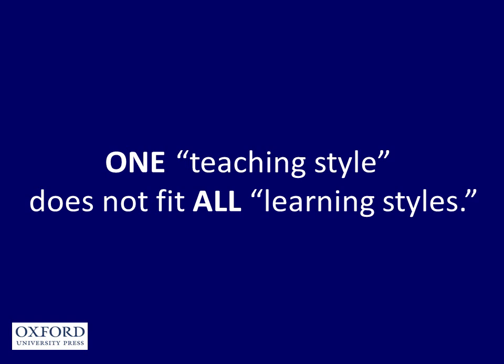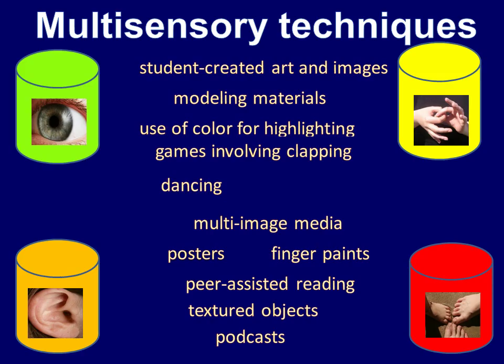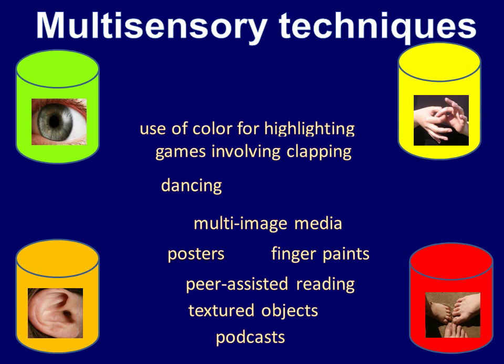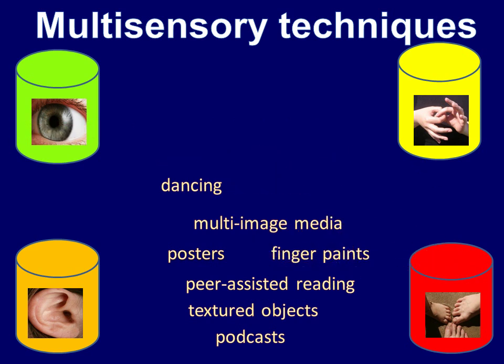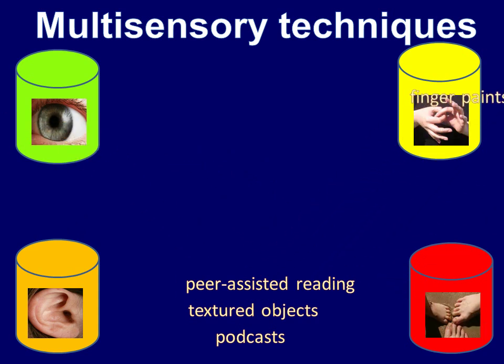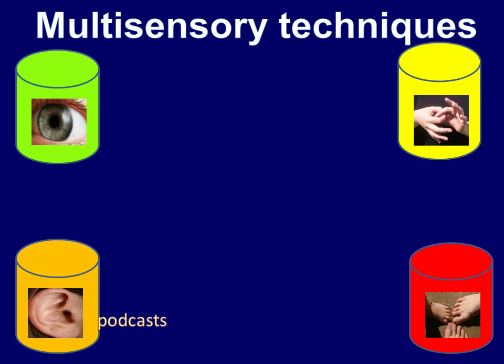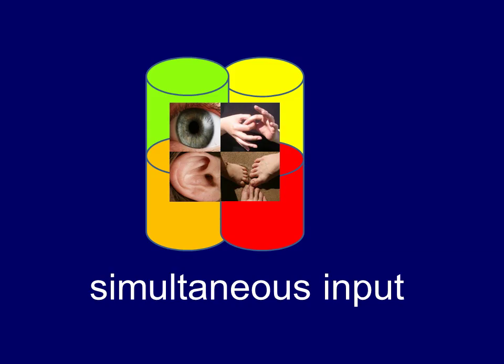On the basis of what you have heard, could you please guess what kind of techniques these are? Are they visual? Are they auditory? Tactile at the top and kinesthetic at the bottom. The first one is student creating art and images — visual, although if you said tactile I think you are also right. Modelling materials — tactile. Use of colour for highlighting — visual. Games involving clapping — kinesthetic, because that involves whole body movement. The research shows that combining all those kinds of inputs brings the best results.